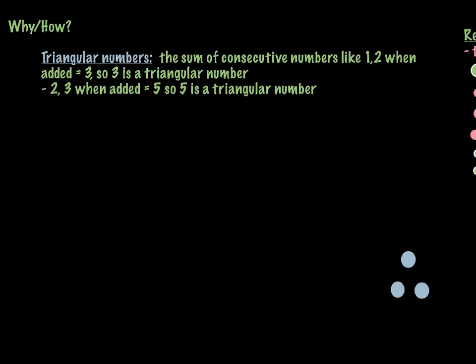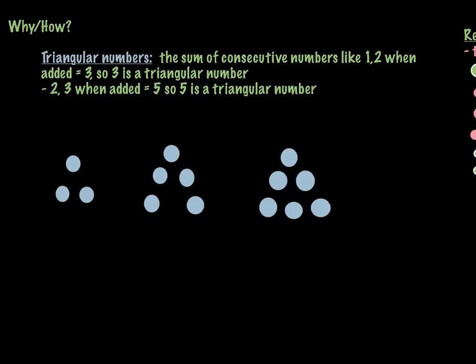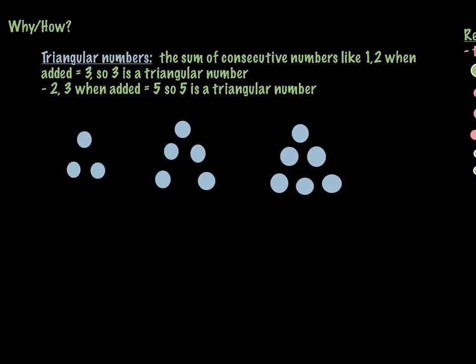Let's look at some pictures to go with the triangular numbers. The first picture I started with three because that's what we got with one and two consecutive numbers. We added them together, we got three. Then I took two and three, added those together. That gave me another triangular number, which is five.